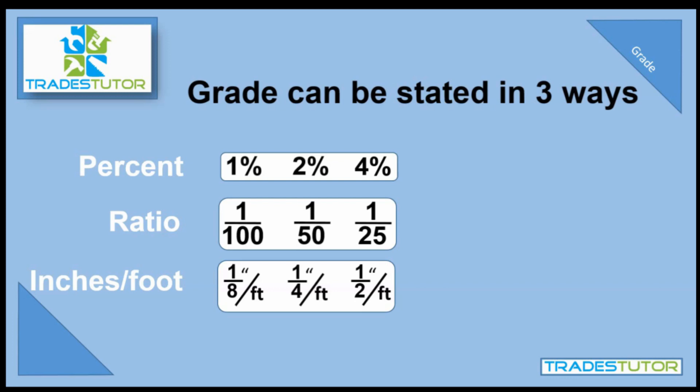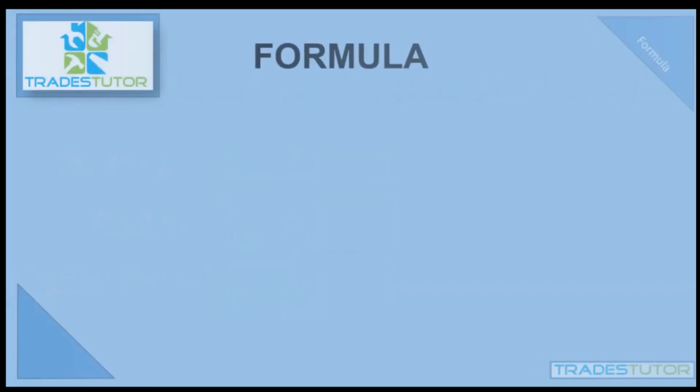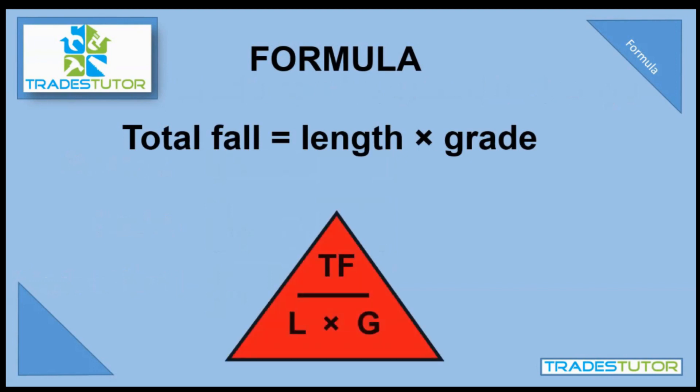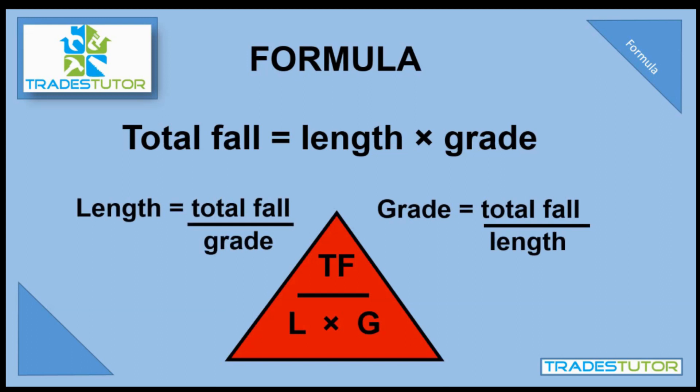So all right, there you go. There you have it. There's the three grades. And now what we need to do is say, okay, how does that work in the formula? There it is. It's not the most complicated formula ever invented. There are three variables and we can use a triangle just like this to come up with any of the three formulas that we want. So for instance, if we wanted to solve for length, it would be total fall over grade. If we wanted to solve for grade, it would be total fall over length.